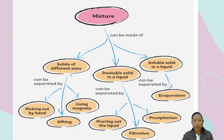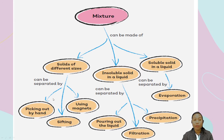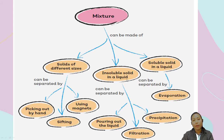How are we going to separate solids that have different sizes? We can do it by picking them out using our hands, or by sifting using a sieve, or by using magnets. Those are the three ways to separate solids of different sizes.